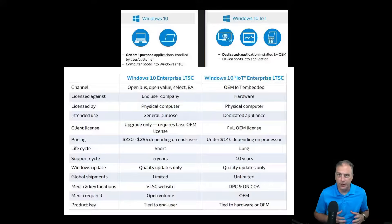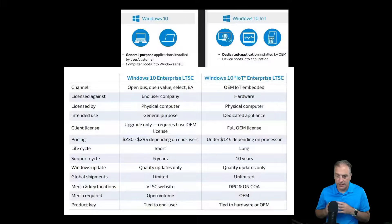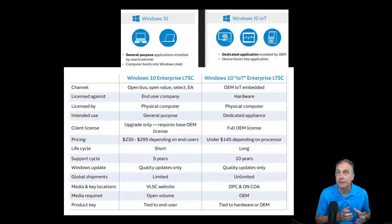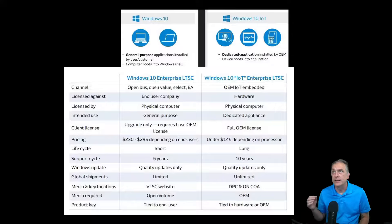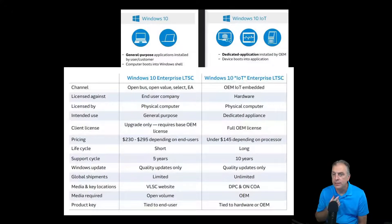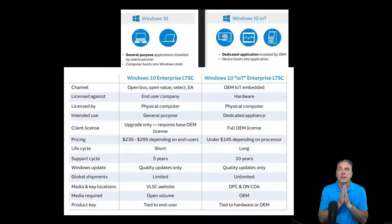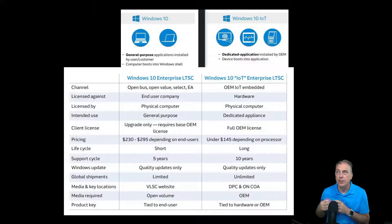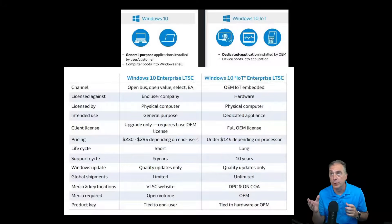That's terrible for an OEM who's building appliances. They're typically building them to sell, and they don't need to know who they're selling to or building for — no end user information required. On the right, OEM IoT licenses are tied against the hardware. It's an actual COA sticker license that you're buying and it gets applied to the hardware. Both are licensed against the physical computer.